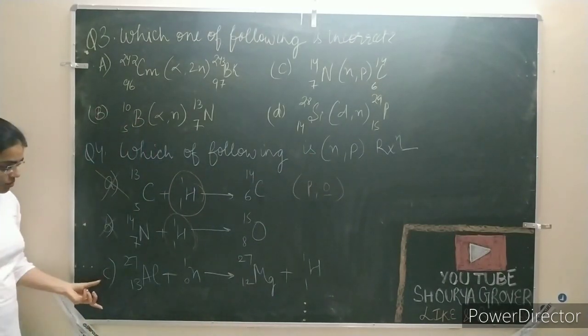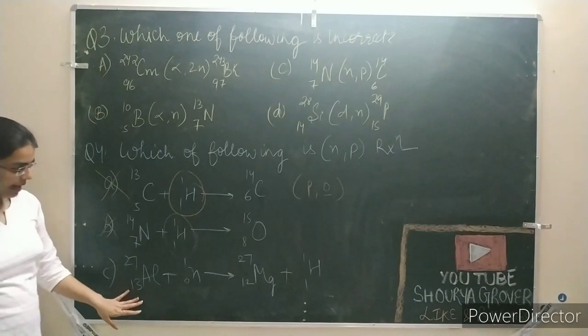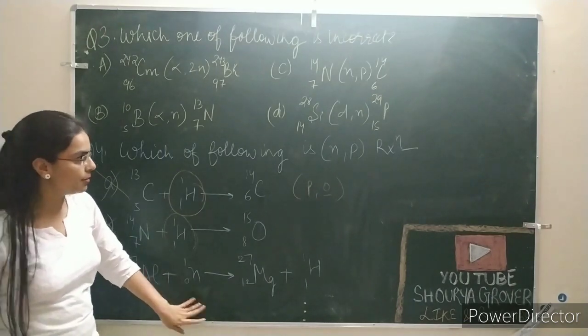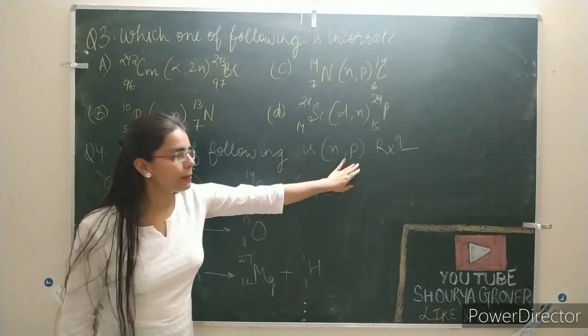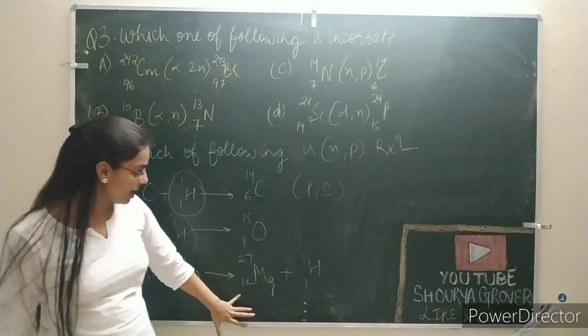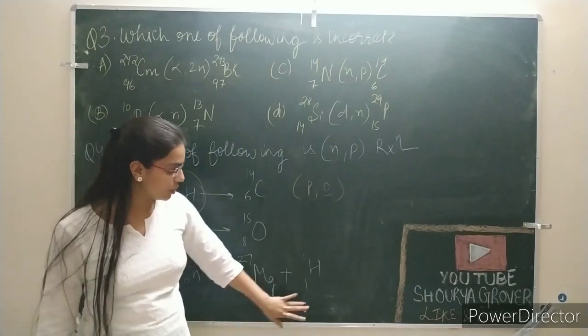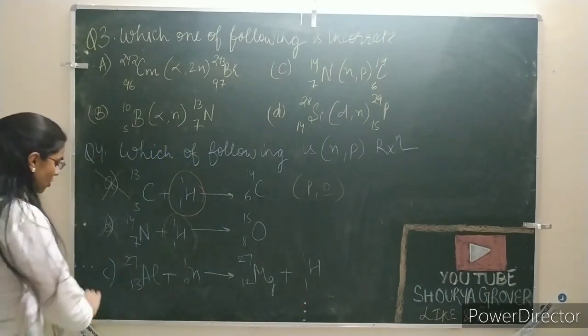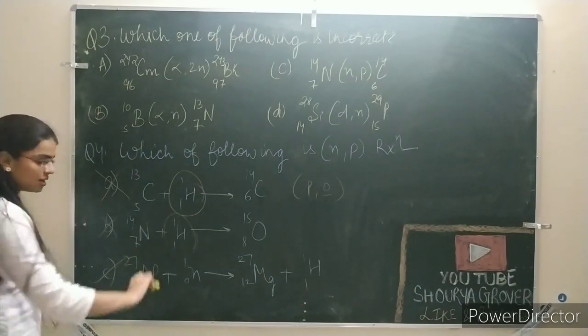Third option: the element, neutron bombardment. Now we need a proton emitted. What is emitted? One other element plus a proton. So our option C is correct.